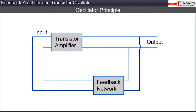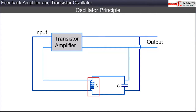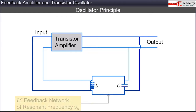A commonly used feedback network consists of an LC circuit formed by the combination of an inductor with inductance L and a capacitor with capacitance C. This is a resonant circuit that produces an output of a particular resonant frequency.